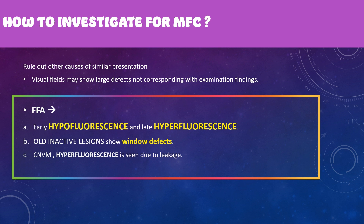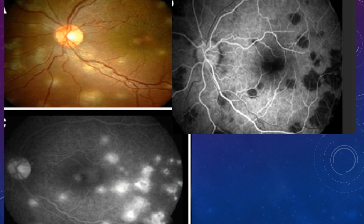Before labeling a patient with multifocal choroiditis, it is important to rule out other causes of similar presentation. Visual fields usually show defects not corresponding to examination findings. On fundus fluorescein angiography, early frames show hypofluorescence followed by hyperfluorescence. Inactive lesions show hyperfluorescence due to RPE atrophy window defects, and wherever a CNVM is present, there is hyperfluorescence due to leakage. In summary: multifocal choroiditis shows hypo followed by hyperfluorescence, plus CNVM-related hyperfluorescence if present.